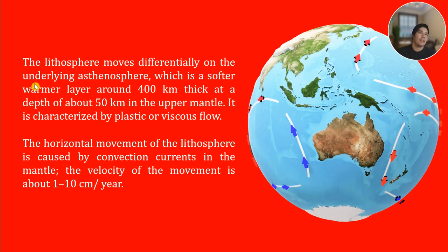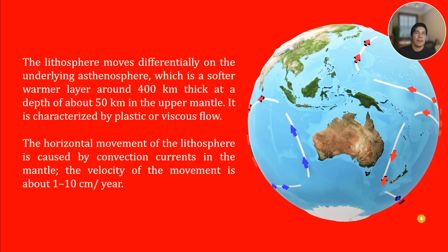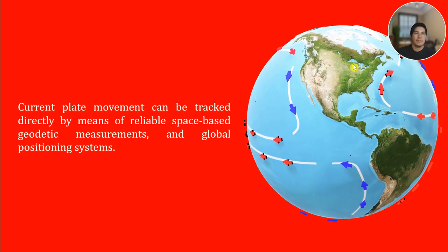The lithosphere moves differentially on the underlying asthenosphere, which is a softer, warmer layer of around 400 kilometers thickness at a depth of about 50 kilometers in the upper mantle. It is characterized by plastic or viscous flow. The horizontal movement of the lithosphere is caused by convection currents in the mantle. The velocity of this movement is about 1 to 10 centimeters per year. Current plate movement can be tracked directly by reliable space-based geotectical measurements and global positioning systems.